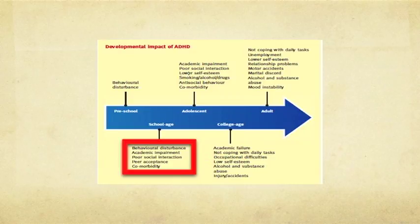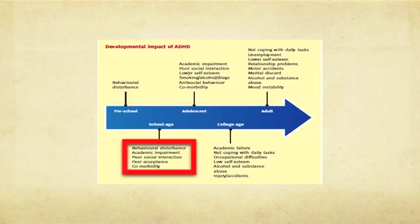At school age — roughly six to twelve — we can still see behavioral disturbance and hyperactive behavior, but academic impairment also begins to kick in. These are kids having trouble in school not necessarily because of a learning issue, but because they're struggling with inattention — making it difficult to attend to the teacher, attend to their work, and complete work. They also begin to have poor social interaction and peer rejection, making friends quickly but having trouble keeping them because they're not reading social cues the same way.